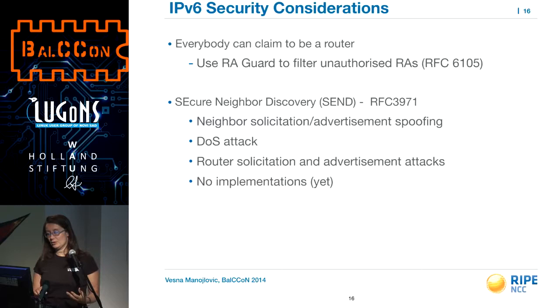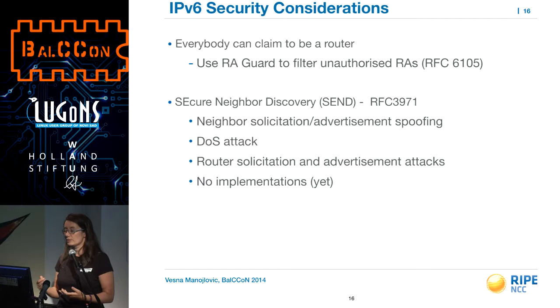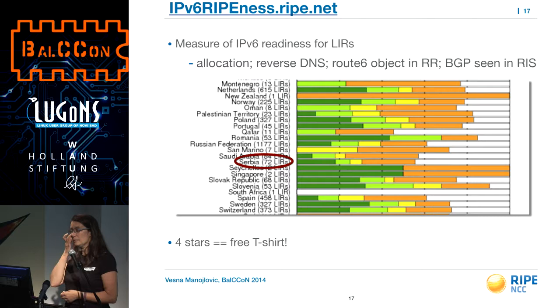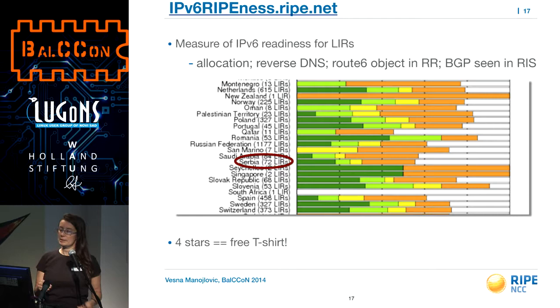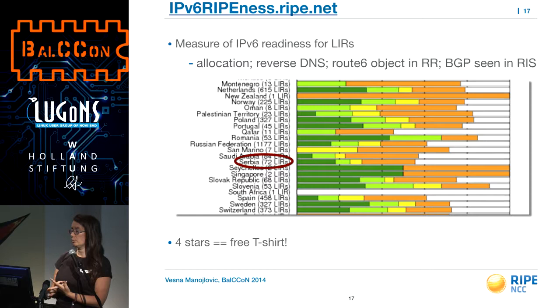Some security considerations since we are at a security conference. IPv6 networking is still being developed because not many people are using it, so security practices are not fully developed yet — there is still a lot to be done. We also measure how ready the members of RIPE NCC are. We look at the numbers per country and how many LIRs asked for the allocation and how far they got with deploying V6, by looking at administrative steps: did they set up reverse DNS, register the route object, announce their prefix? That was the four-star IPv6 ripeness.